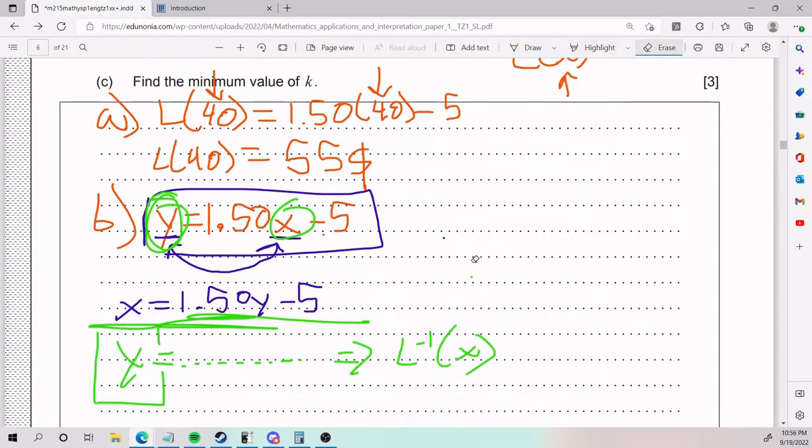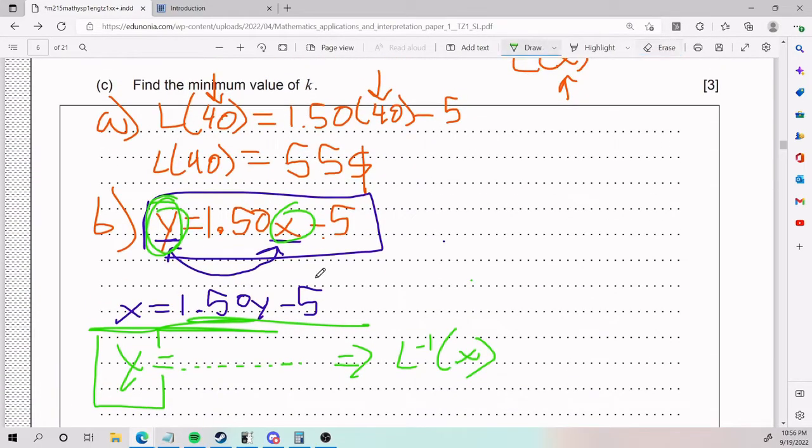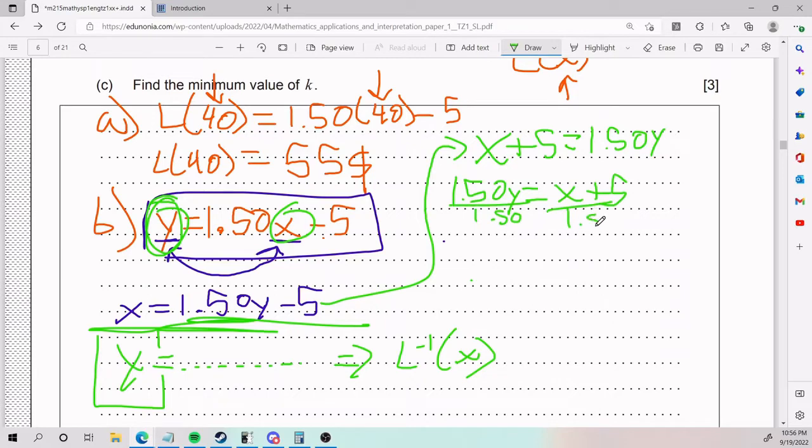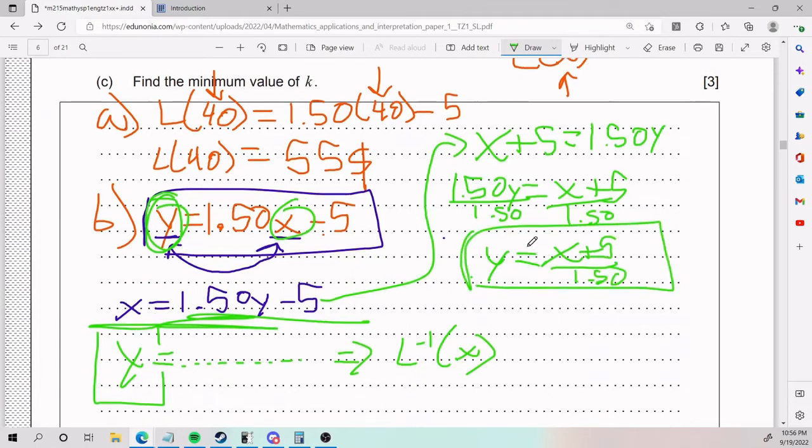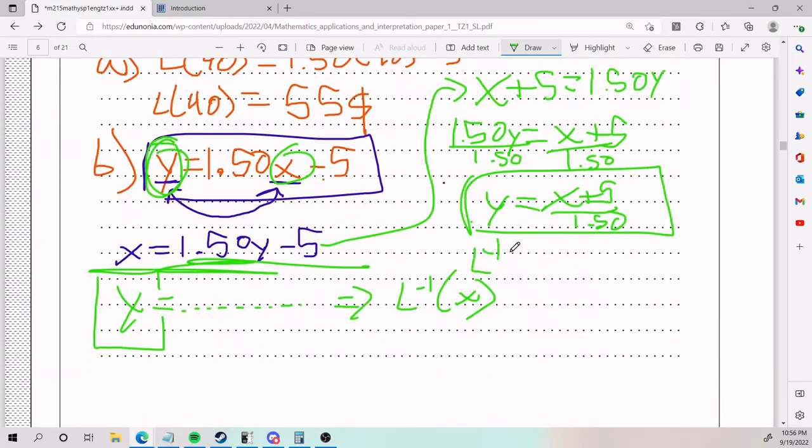So that being said, I am working from here. Getting Y alone, I add 5 to the other side: X plus 5 equals 1.50Y. I'd rather have Y on my left side because it looks nice, so I'm just going to flip it. I haven't done any math stuff yet. Now we divide by 1.50 to both sides. Y equals (X plus 5) divided by 1.50. This is my inverse function.